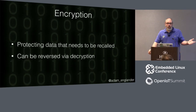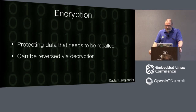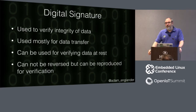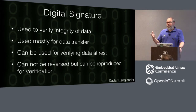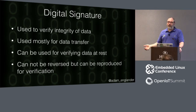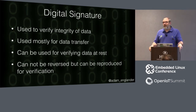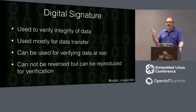Encryption protects data that needs to be recalled — you need to be able to decrypt it to use that data. Digital signatures are used to verify the integrity of the data, mostly for data transfer, but you can also use digital signatures to make sure no one has gotten onto your file system and changed your code. You can re-verify before you run as part of a startup, which is important because leaving SSH open on Linux-based IoT is unfortunately prevalent — people can put in code you don't want getting run.